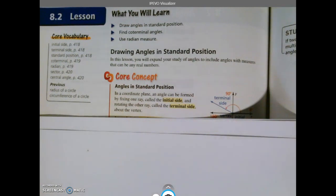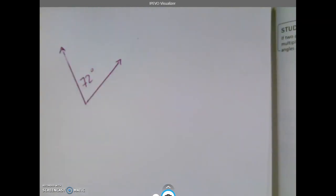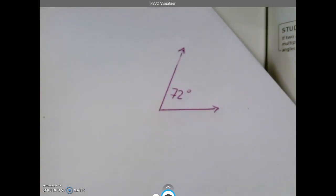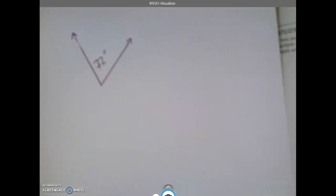The definition here, some of the things are kind of confusing when they say fixing one ray called the initial side and rotating the other ray called the terminal side. Let's make that more basic. Let's take this angle here that's 72 degrees. But do we want it facing this way or this way, or where is it on the page? That gets kind of confusing.